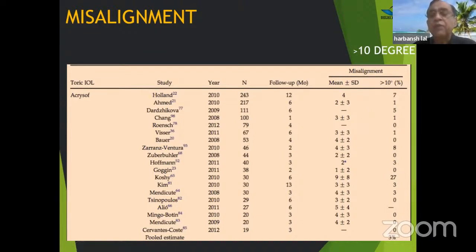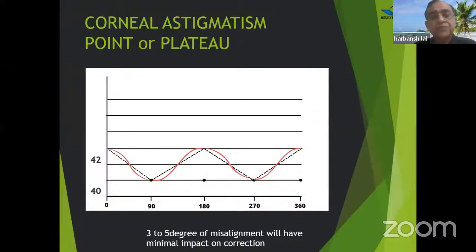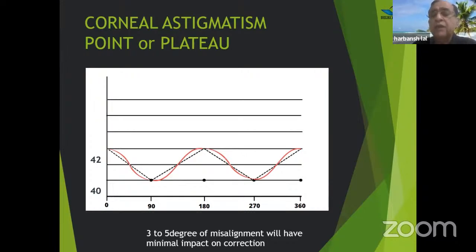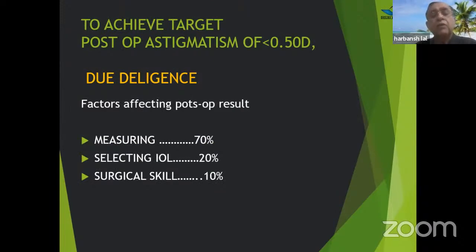An important point: when corneal astigmatism exists from zero to 180 degrees, it is not a straight line — there is a plateau. Three to five degrees of misalignment is really not going to cause much influence because the corneal astigmatism may remain at 42 diopters over a five to ten degree area. So small misalignment will not cause much difference. Once we target post-op astigmatism of less than 0.5, due diligence must be given to all factors.